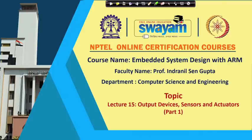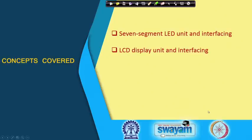In this lecture we shall be starting with a brief discussion on the various output devices, sensors and actuators, which will be required for the actual experiments and demonstrations using the STM32 and the Arduino boards. The title of this talk is 'Output Devices, Sensors and Actuators - Part 1'. We shall be talking about two different output devices: the 7-segment LED display unit and the liquid crystal display (LCD) unit.